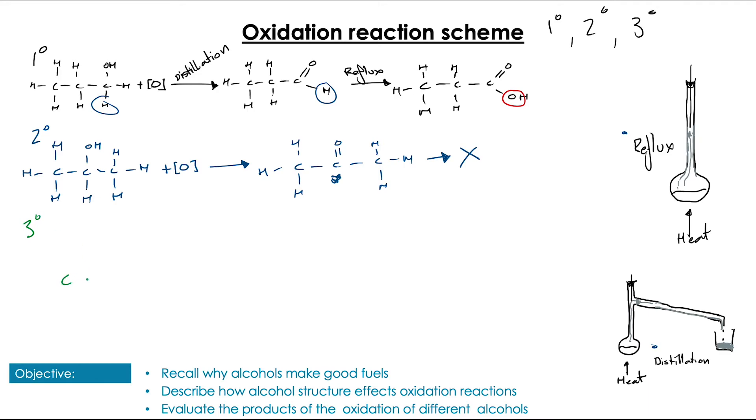So what would we expect for tertiary? If we draw out a tertiary alcohol, what we see is the carbon that the alcohol group is attached to doesn't have any free hydrogens to lose. And so this cannot be further oxidized at all. With tertiary, we get none, no matter how much reflux or distillation we do.